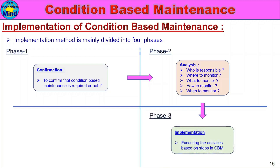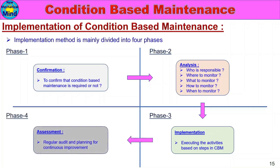Phase 3 is Implementation — executing the maintenance activities based on the steps in CBM. Phase 4 is Assessment — conducting regular audits and planning for continuous improvement of the Condition Based Maintenance program.